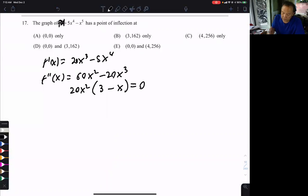So if I set these equal to zero, I'm going to get two answers: x is zero or x is three. So those are the two possible places where the second derivative could change signs.